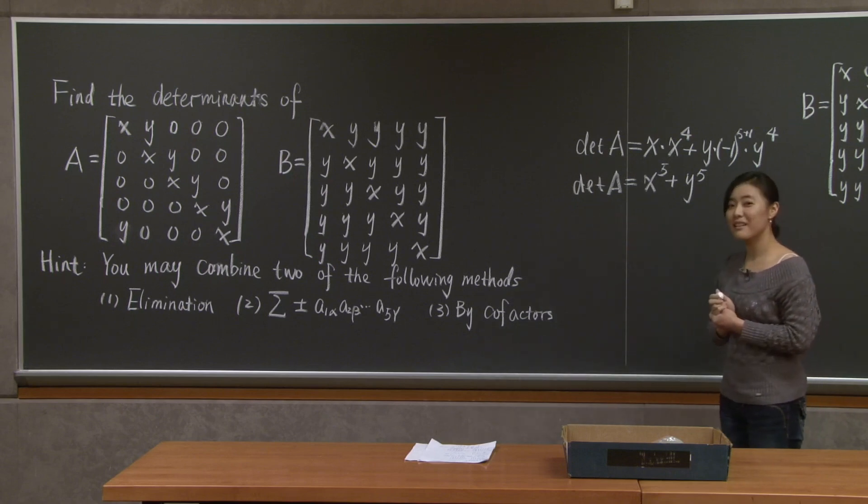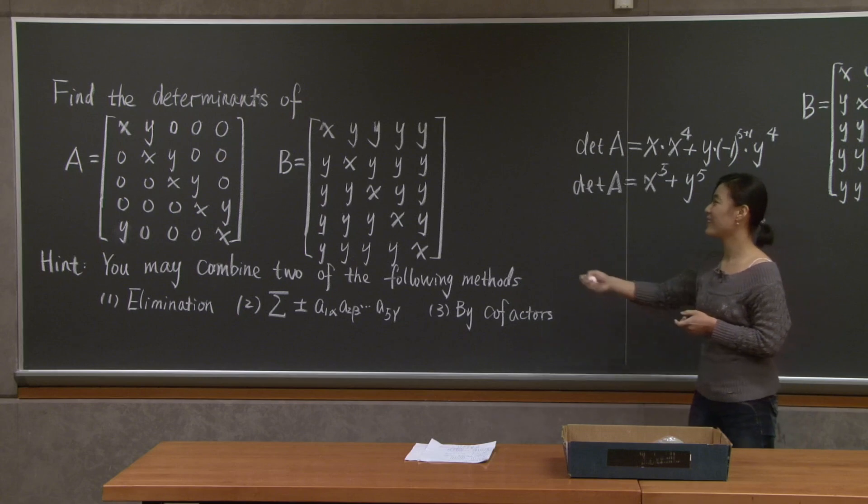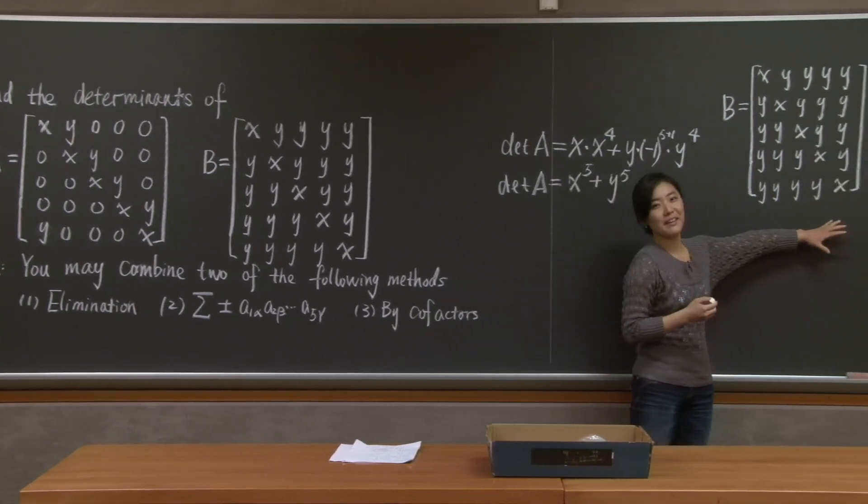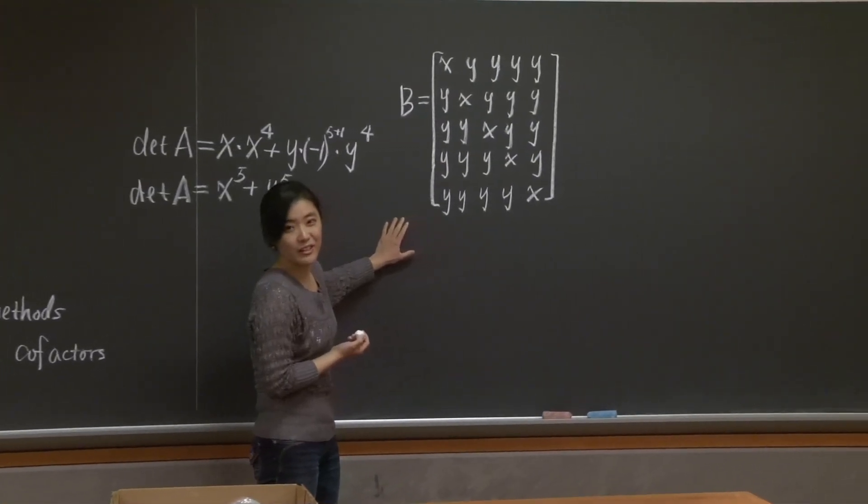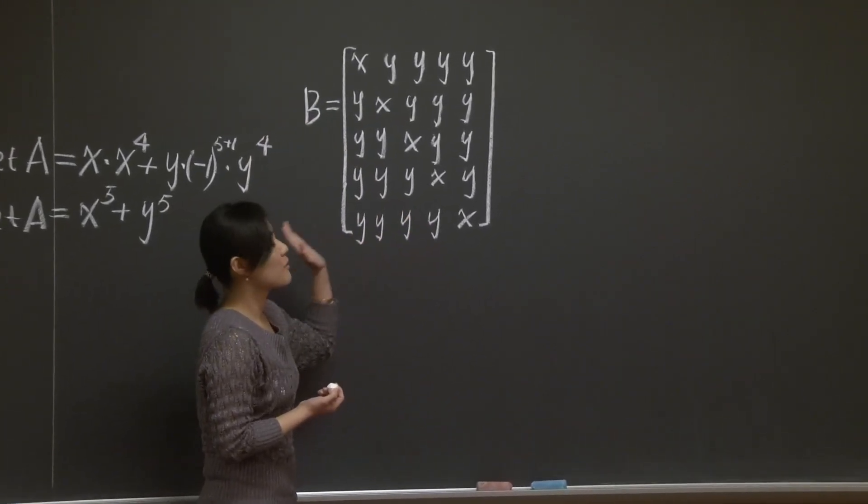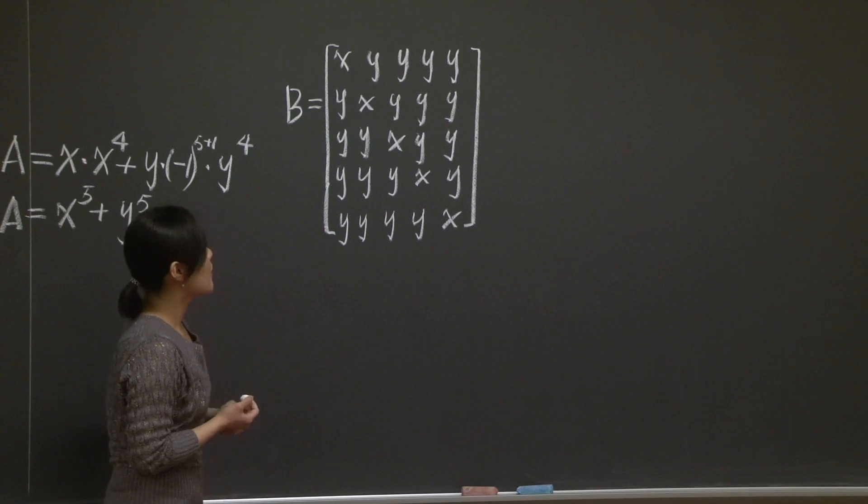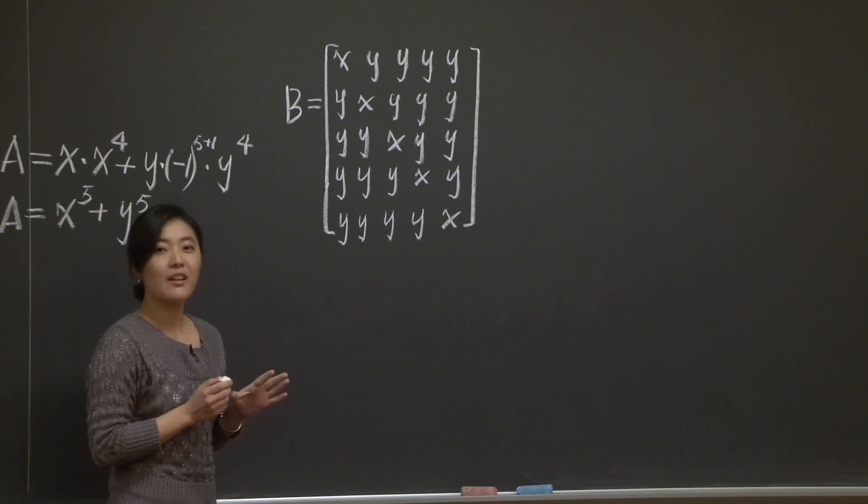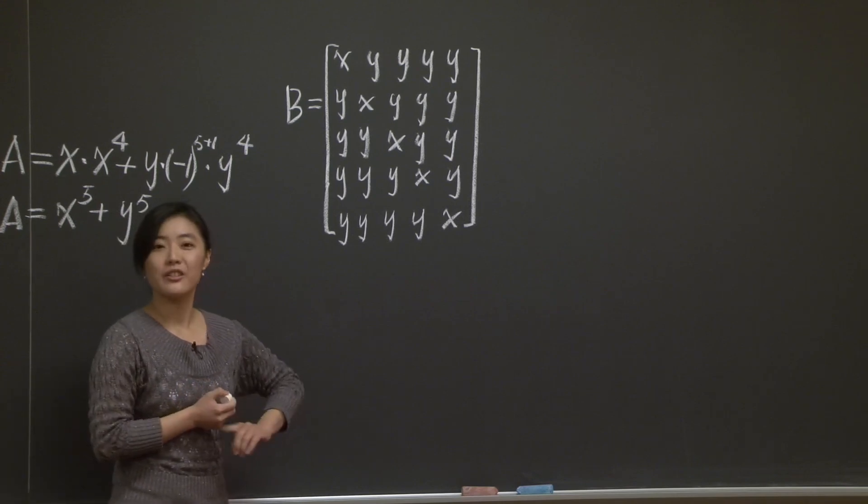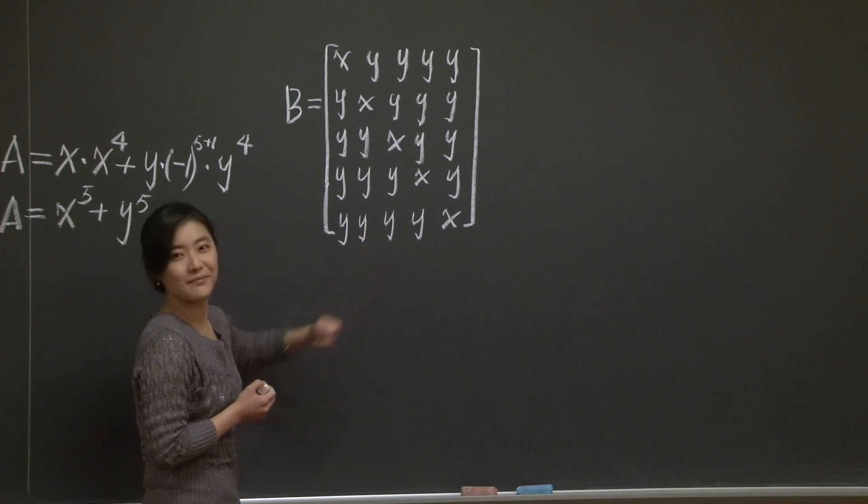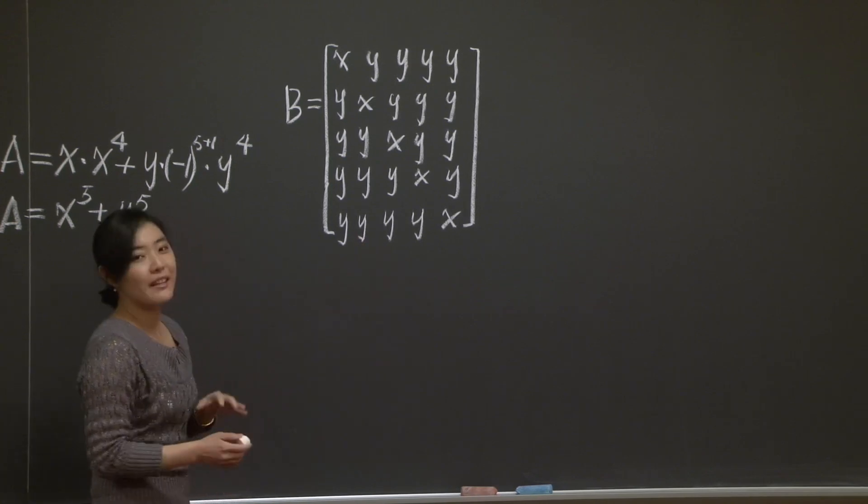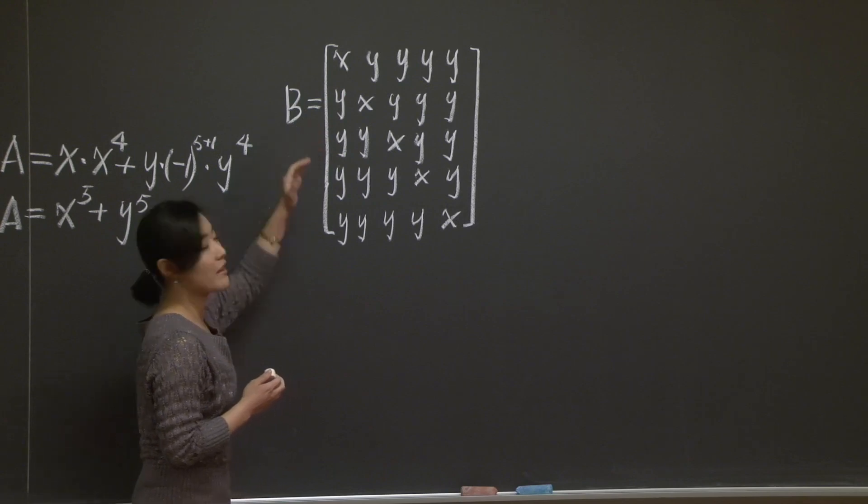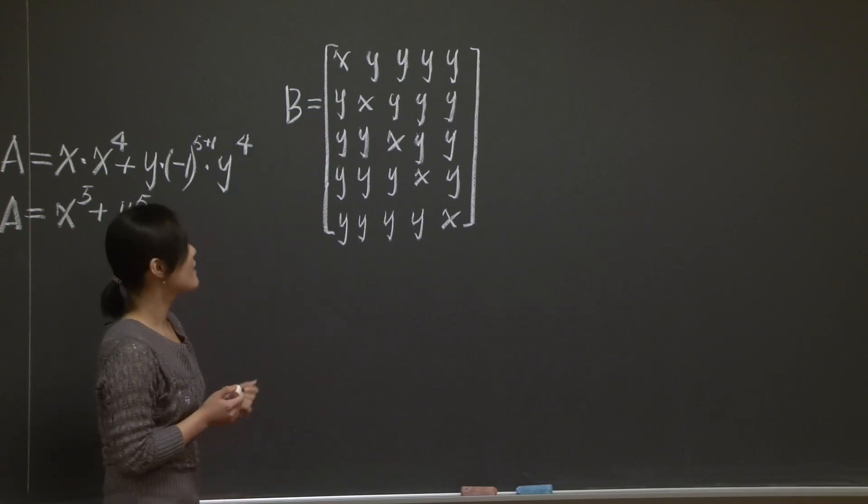Well, the determinant of A is not too bad because A has a lot of zero entries. Now, let's look at the determinant of matrix B. I have another copy of B here. So B also has a very clear structure. It has x along its diagonal and y everywhere else. But in general, B does not have any zero entry. So perhaps our first step should be carrying out elimination to introduce zero entries into matrix B. Of course, you can do it by the regular routine. You start with the first row, find the pivot, and you eliminate the second row and the third row, and so on and so forth. But in this case, there's a shortcut.